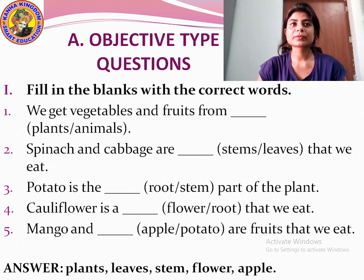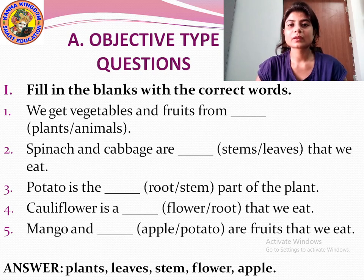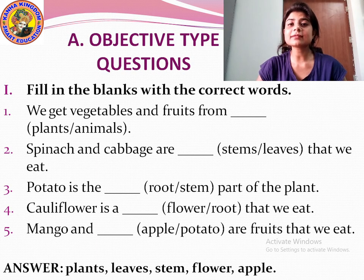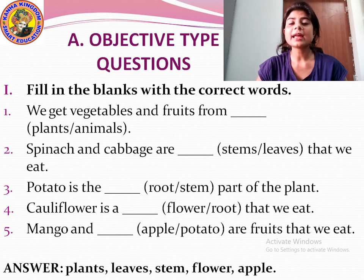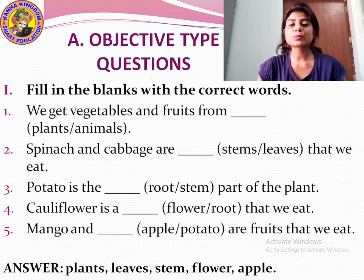Question number two: Spinach and cabbage are dash — stem or leaves that we eat. The answer is leaves. L-E-A-V-E-S. Spinach and cabbage are leaves that we eat.